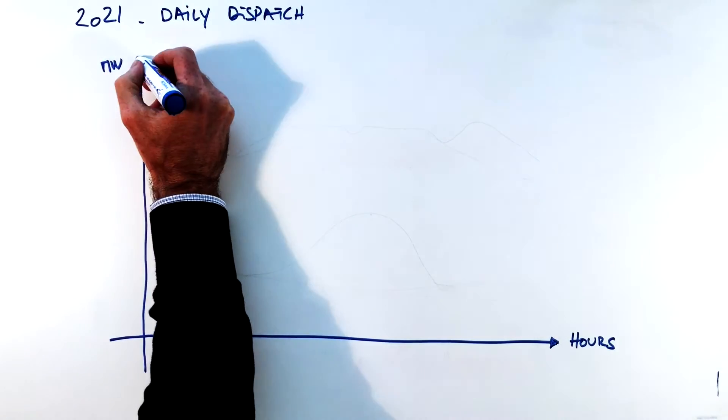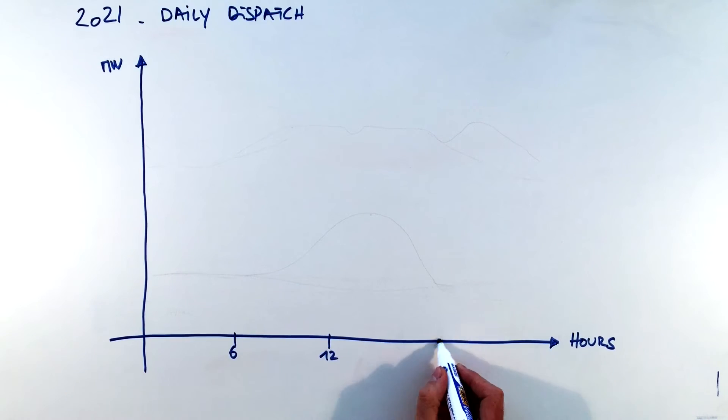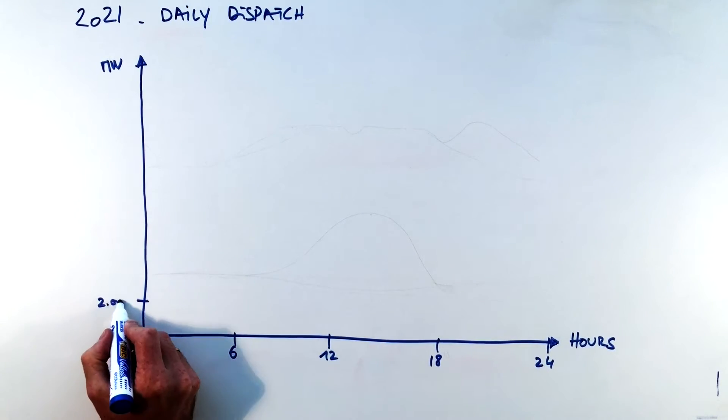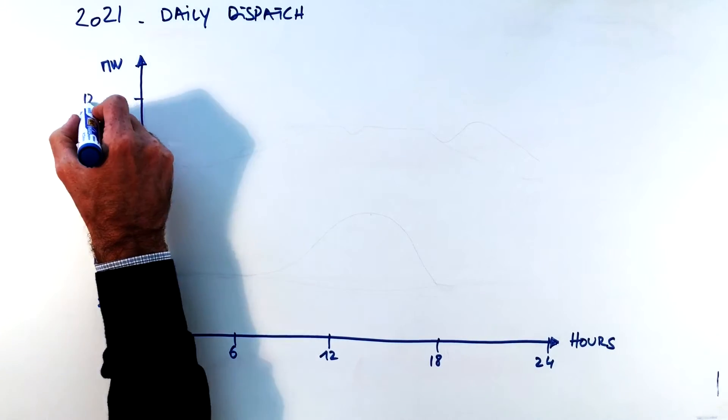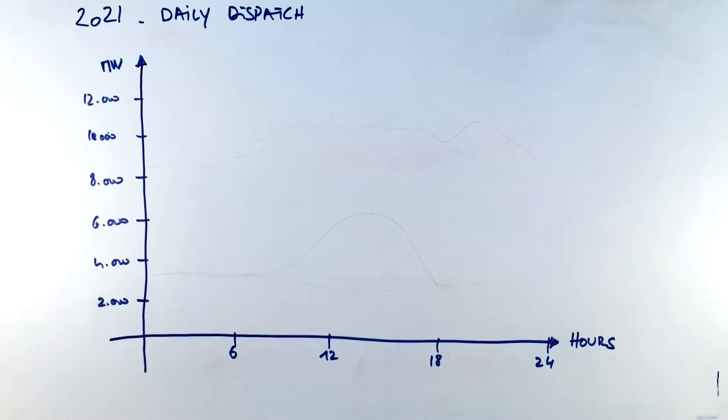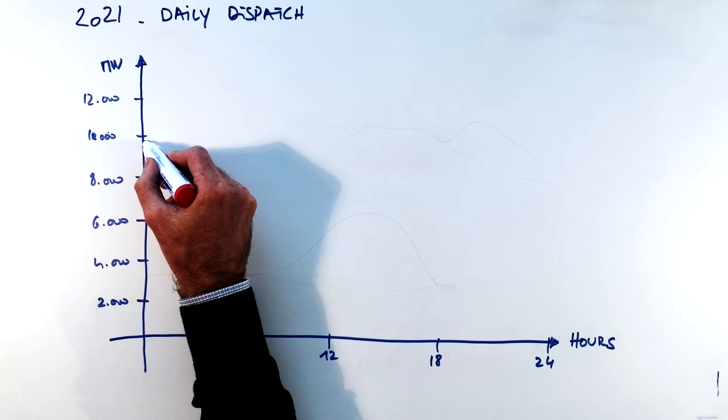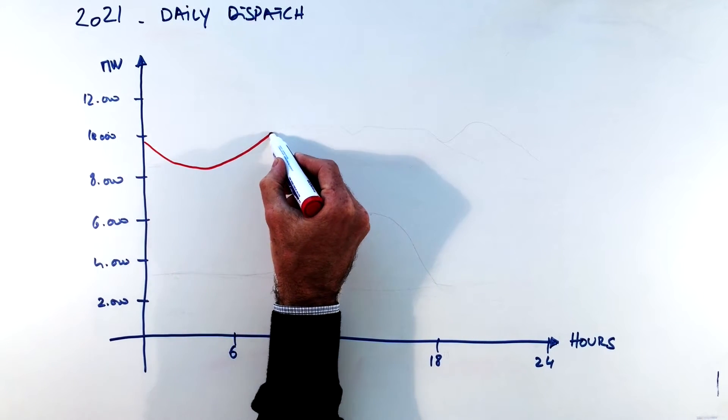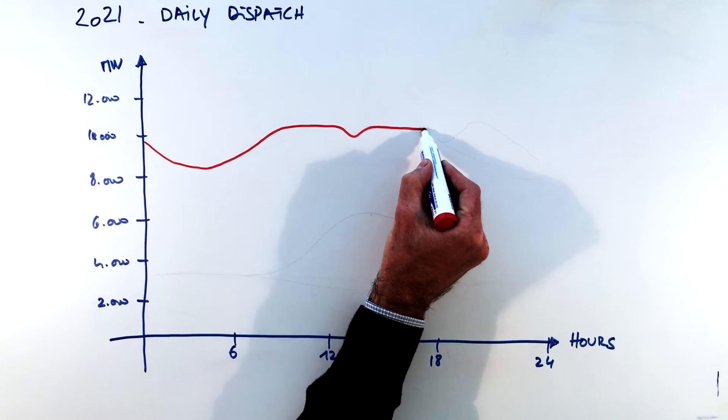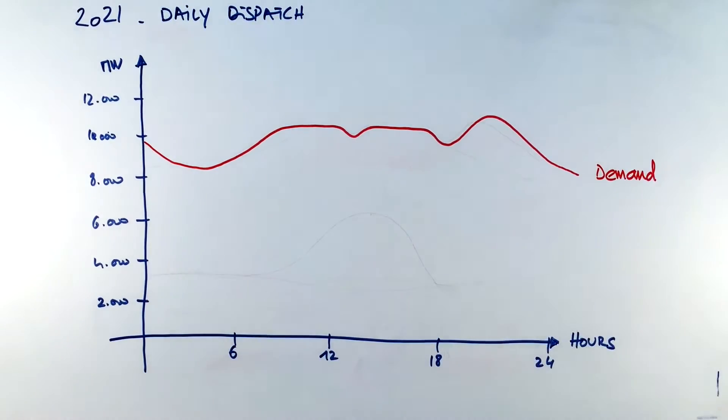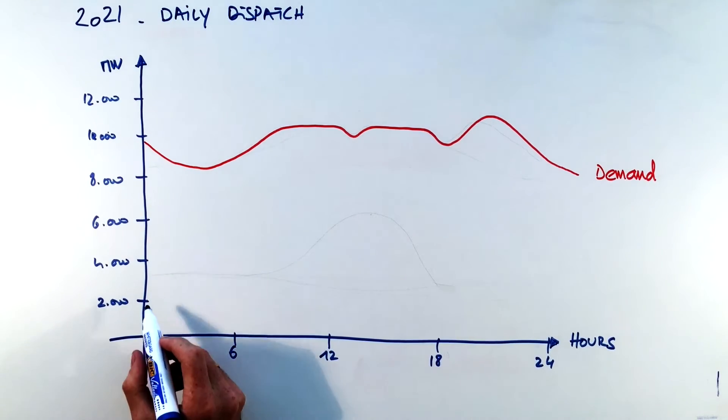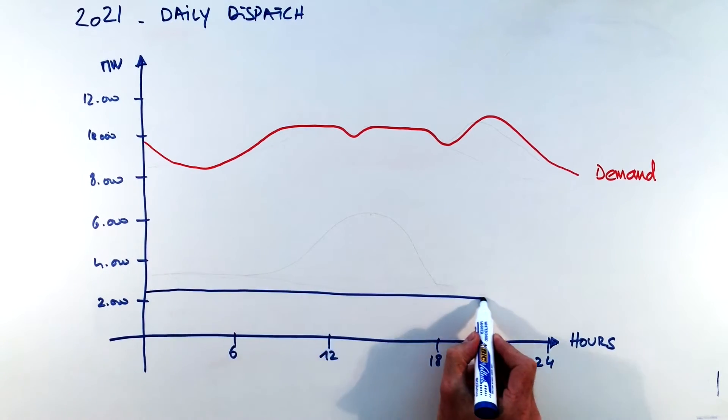So now we're going to look at the daily dispatch. So here we're going to look at the graph in a different way. On the horizontal axis we're going to put the hours of the day and on the vertical axis the megawatts of installed capacity and demand. So we're first going to graph the demand curve. So demand starts at night coming down, reaching its lowest point at four in the morning, then going up in the morning, we have a plateau and then going down for lunch, another valley in the evening and a peak demand in the late evening.